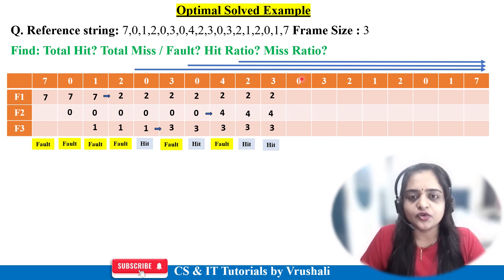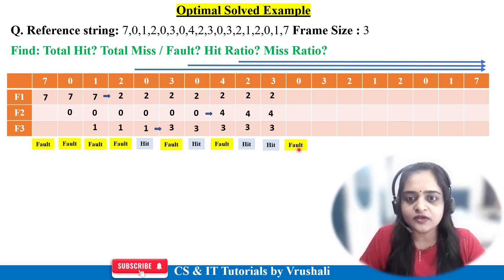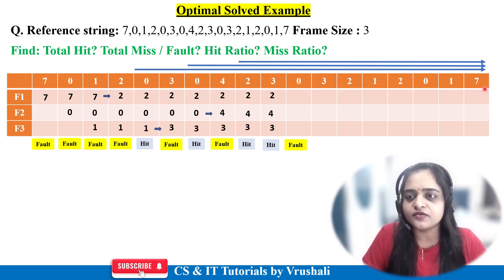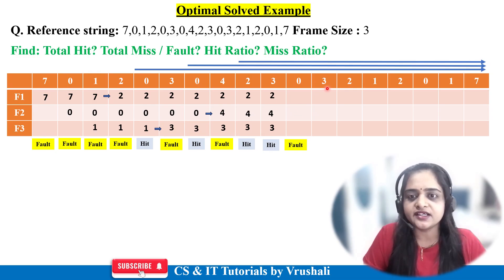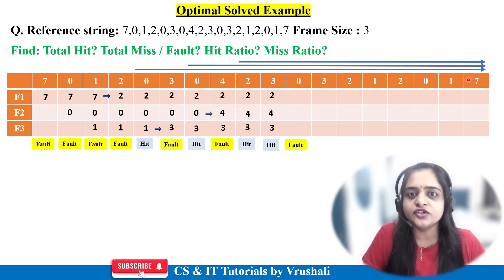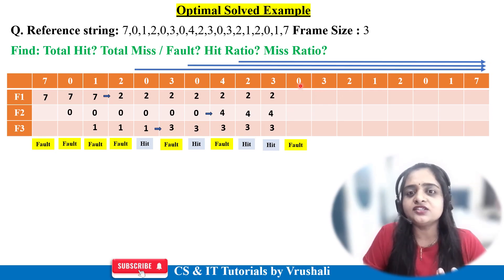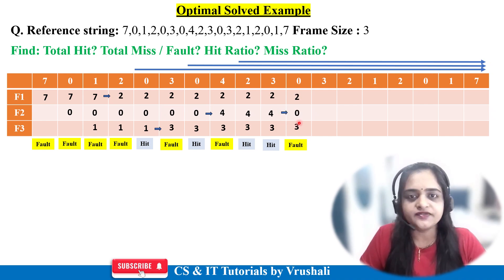Next is page 0 — not present in main memory, so page fault. Check the future reference page from this point. Frames currently hold 2, 4, 3. After page 0, looking ahead in the reference string: 2 is present, 3 is also present, but 4 is not present in the future. It means page 4 will no longer be used for execution. When a particular page is not available in future references, that is the page to replace. So page 4 is replaced with page 0, and remaining data stays as it is.